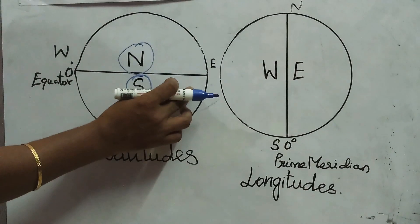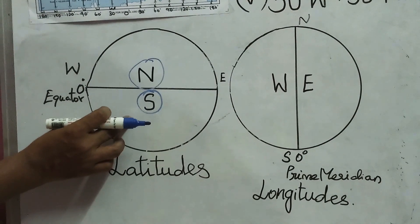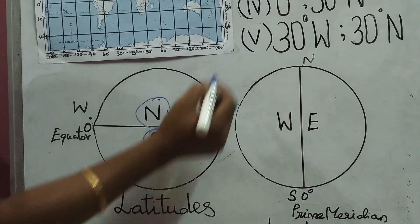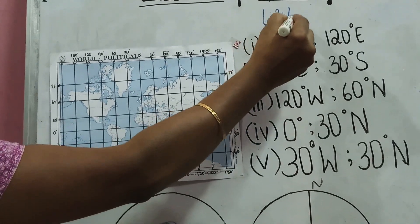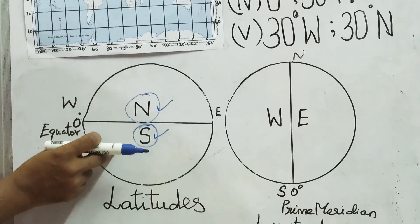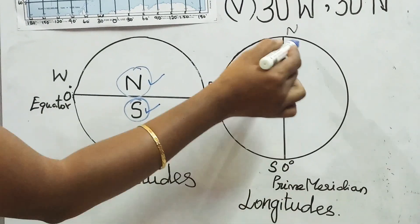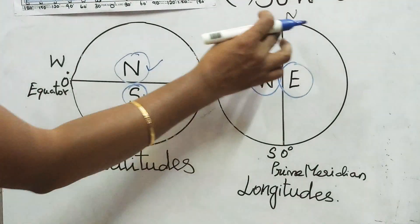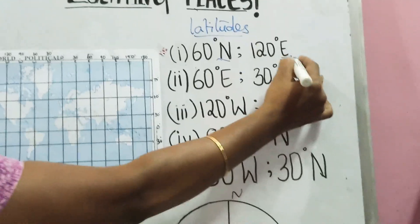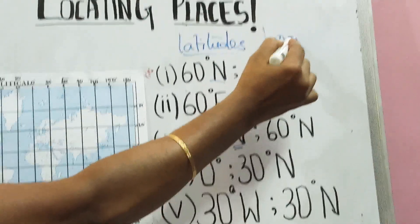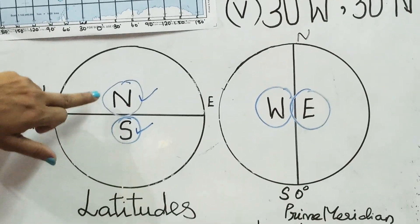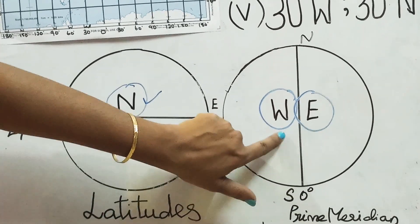The equator runs from west to east and divides the earth into the northern and southern hemispheres. When coordinates are written with the direction north or south, it is a latitude. Longitudes are lines which divide the earth into western and eastern hemispheres, so coordinates mentioned as west or east are longitudes. Latitudes use north and south; longitudes use west and east.